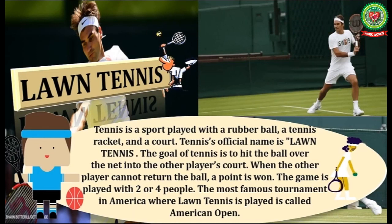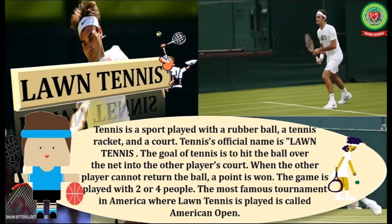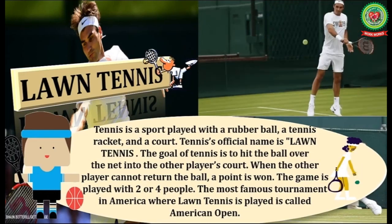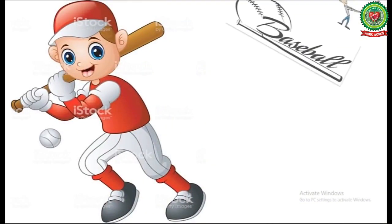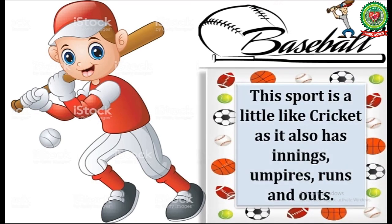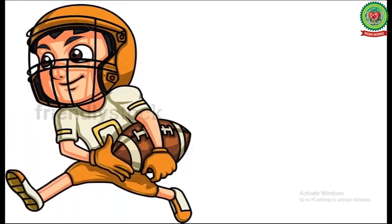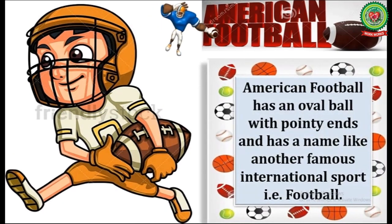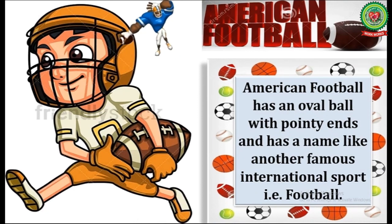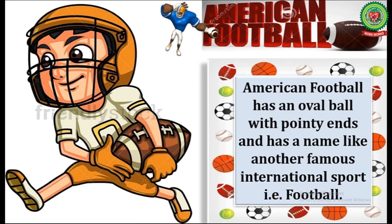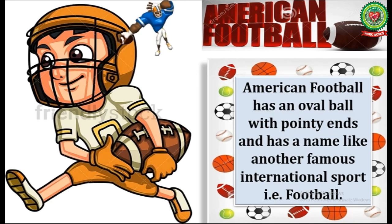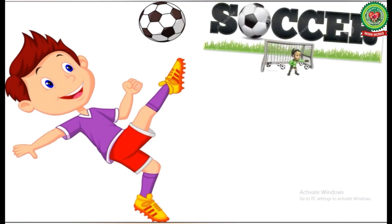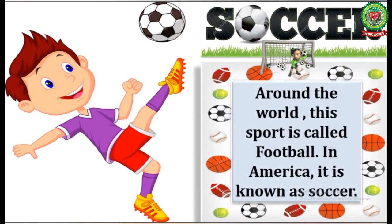Now students, as we have discussed about the sports played in America, let's have a recall. Number one is baseball — this sport is a little like cricket as it also has innings, umpires, runs, and outs. Number two is American football — it has an oval ball with pointy ends and has a name like another famous international sport, that is football. Number three is soccer — around the world the sport is called football; in America it is known as soccer.